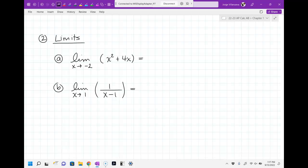Things like the limit as X approaches, let's say negative two of X squared plus 4X. Okay. So something like that. The limit as X goes to, let's say, one of one over X minus one. There might be some where you're going to have to factor first and break stuff down before you can plug stuff in.